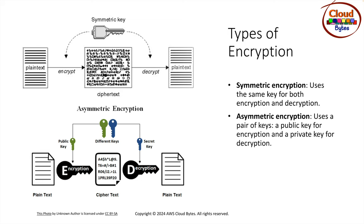There are primarily two types of encryption: symmetric encryption and asymmetric encryption. In symmetric encryption, you have plain text with sensitive data, and an encryption key is applied to produce ciphertext, which is unreadable. To decrypt it back to plain text, the same symmetric key is applied again — meaning a single key is used for both the encryption and decryption process.